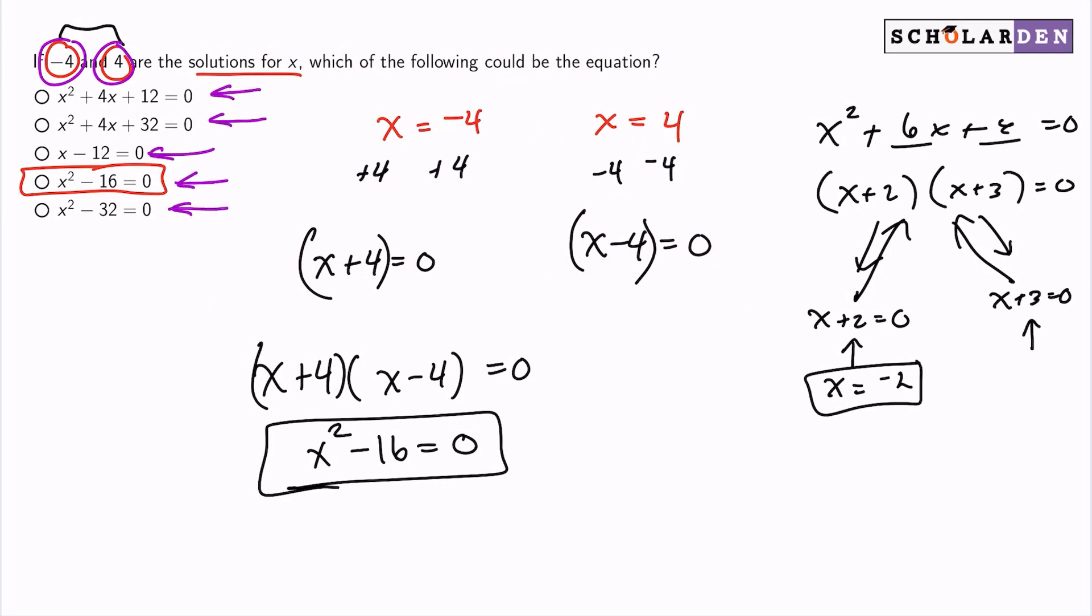And it would be easier to start with these bottom three answer choices because all you would have to do is plug in negative 4 and 4. And they would result in the same because anything squared is still positive.